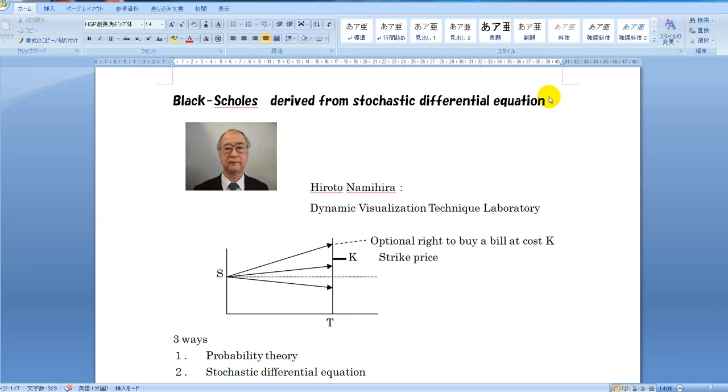A bill cost S changes its value during time T. A strike price K is set. Option price is the right to buy the bill with cost K at time T when the resulting bill value is greater than K. What is the proper cost of this right at now? The Black-Scholes formula makes clear this question.